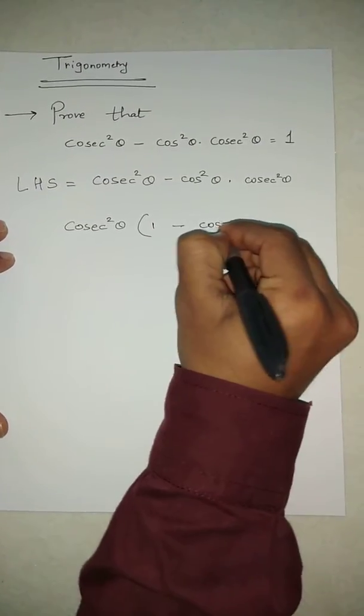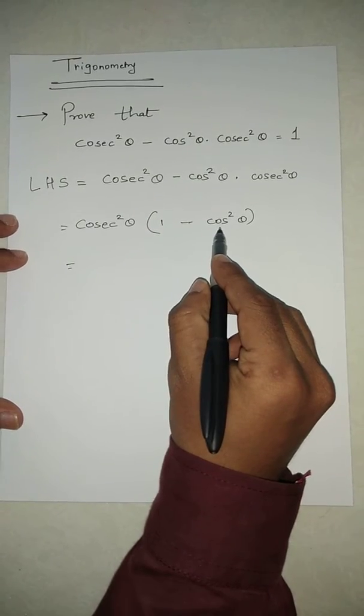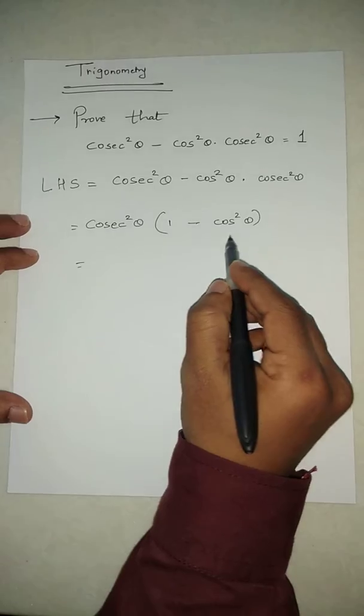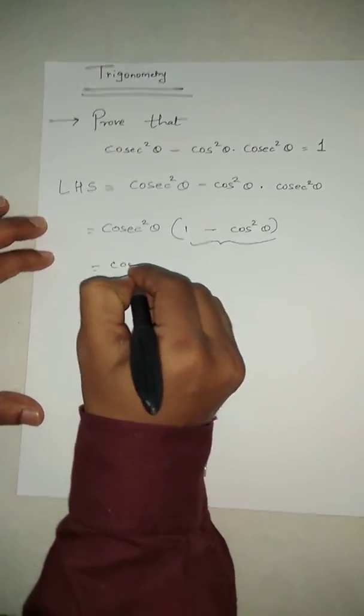Now after this, we know that sin²θ + cos²θ is equal to 1. So we can write sin²θ equal to 1 - cos²θ. So next line, cosec²θ · sin²θ.